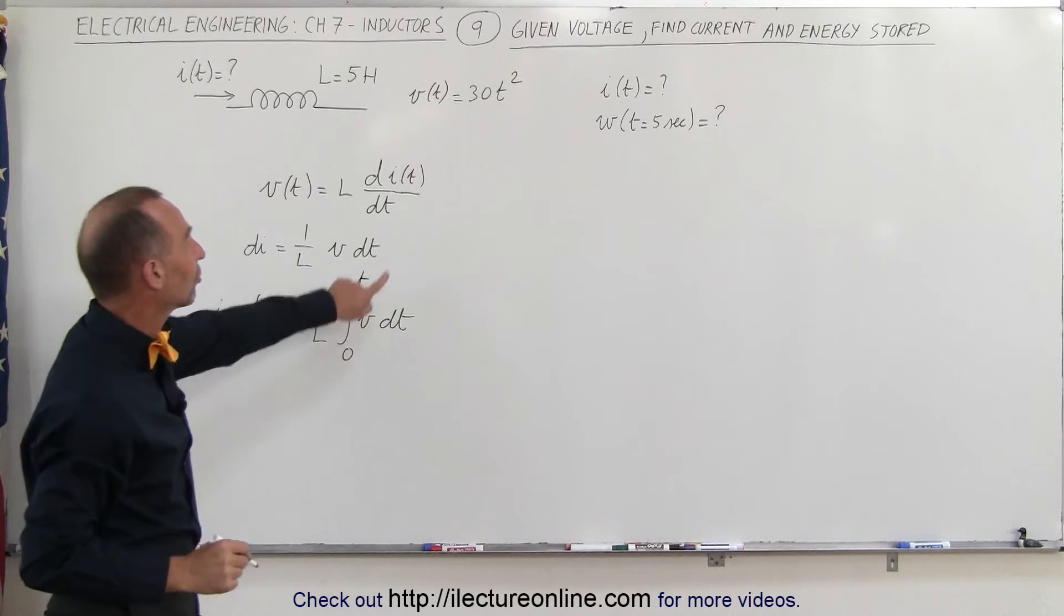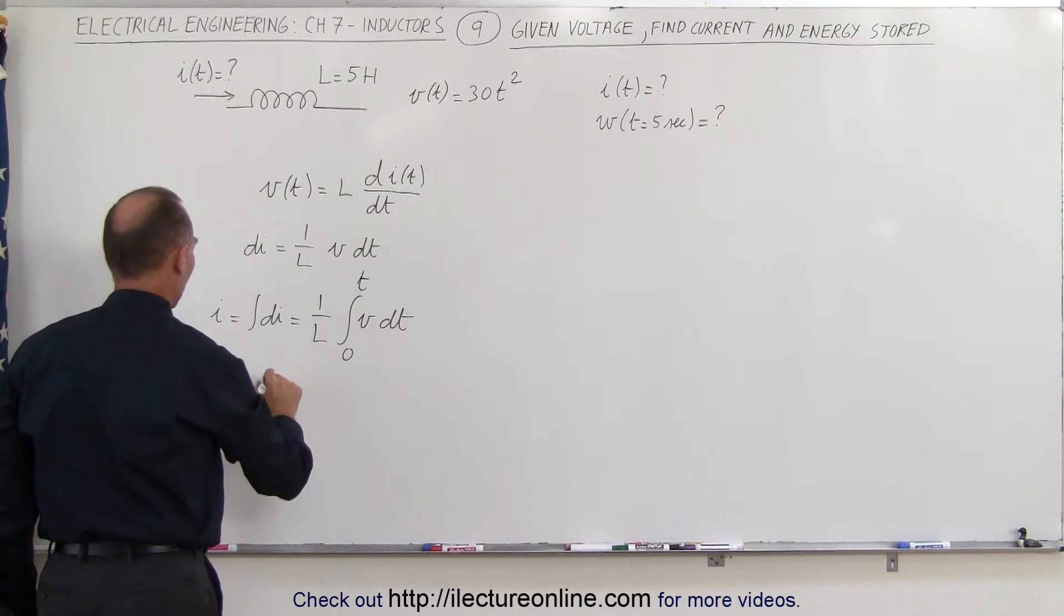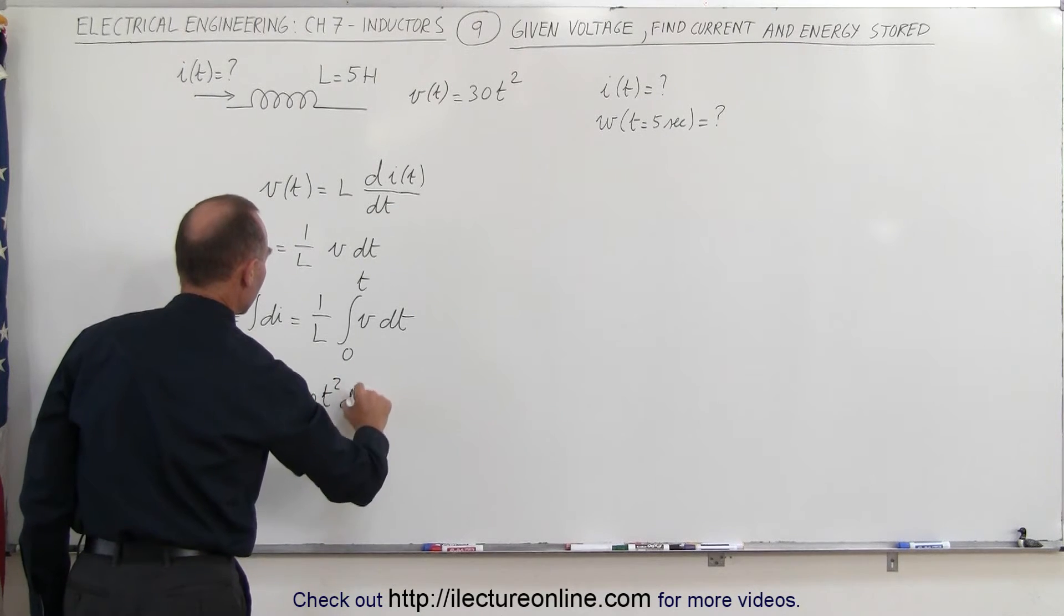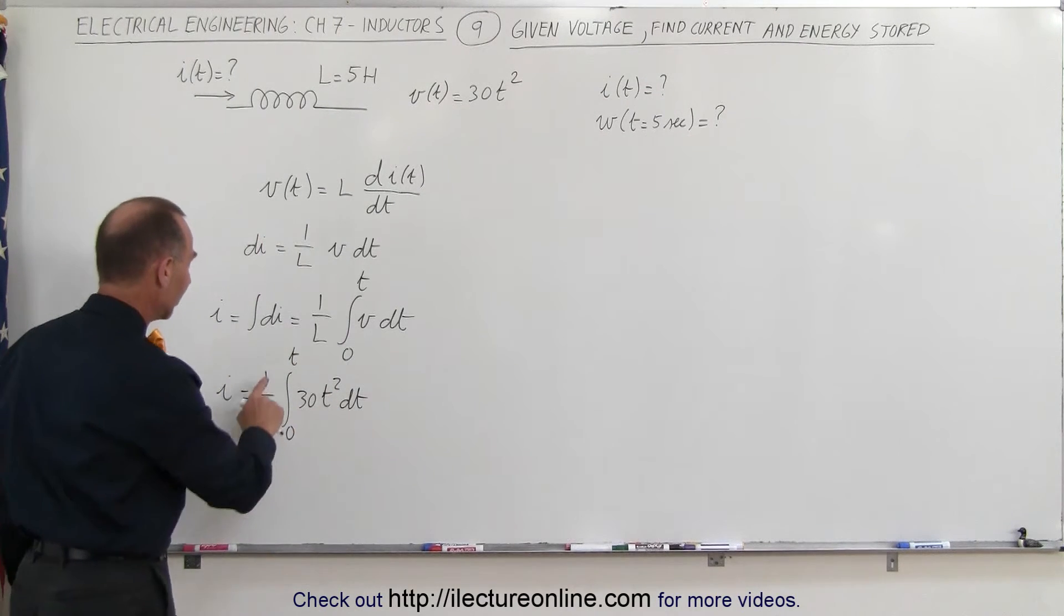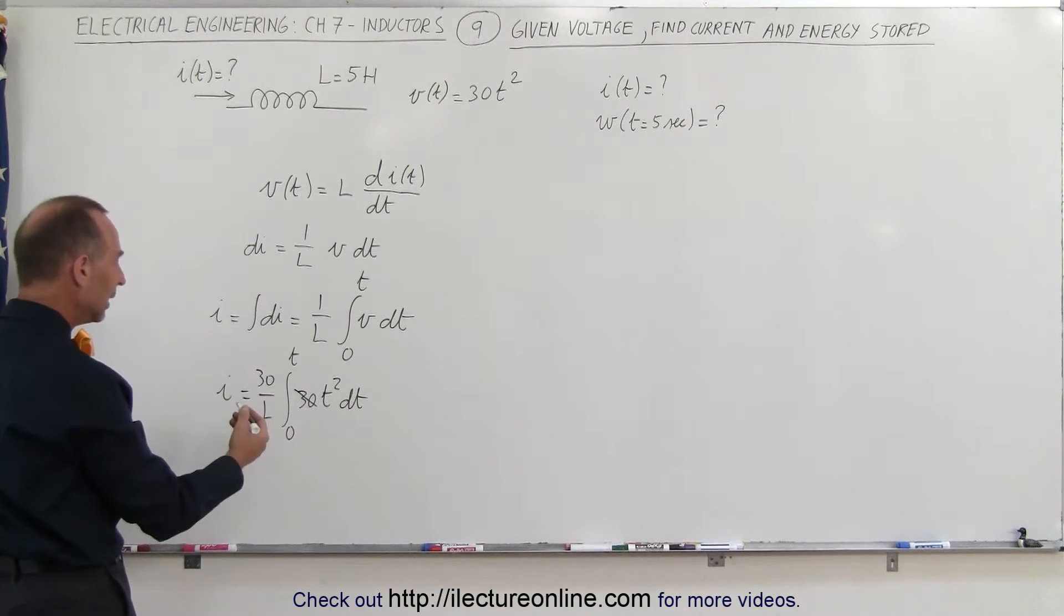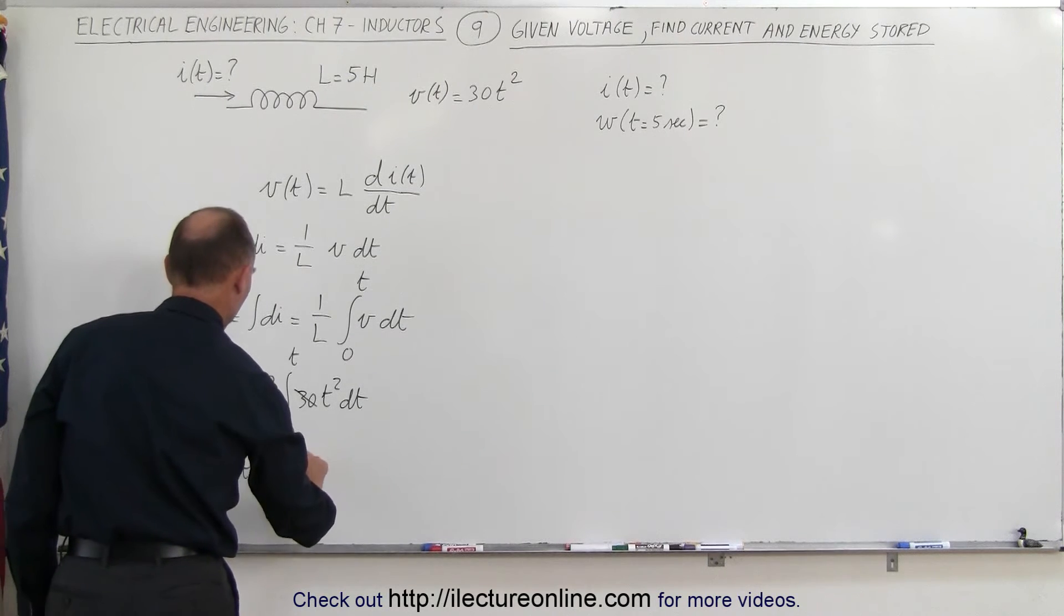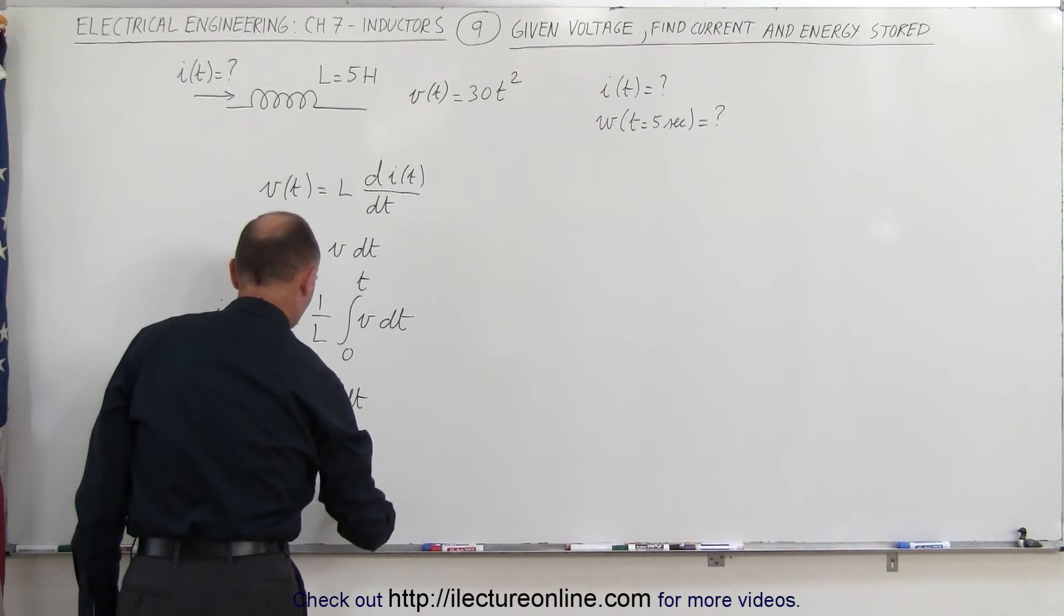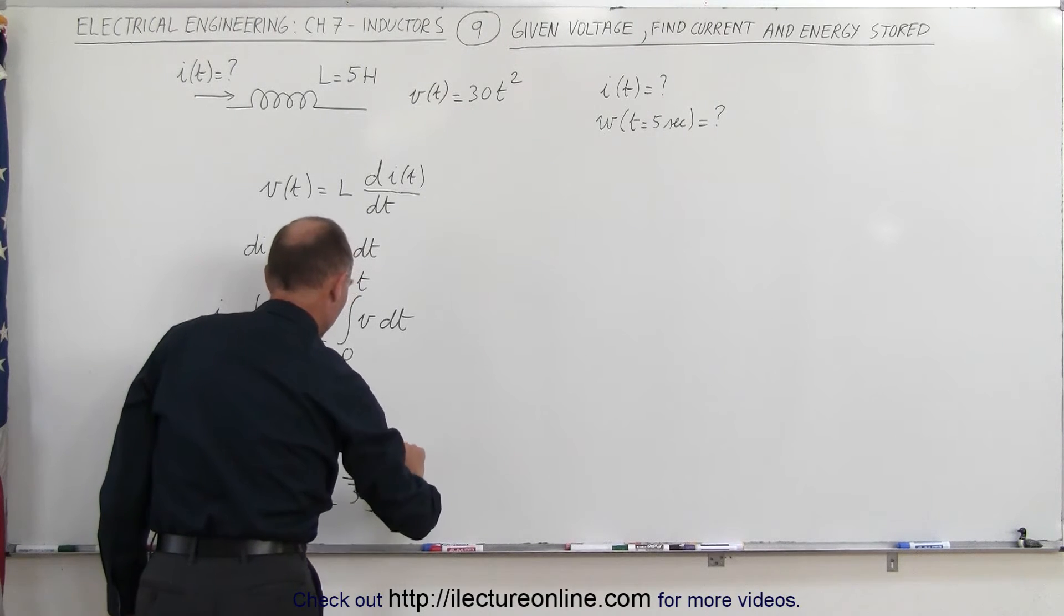Now V is the function that we have over here which is the function of time. So we can say that I is equal to one over L times the integral of 30 T squared dt from zero to T. Of course the 30 can come outside integral sign. We can then integrate that. So we can say that I as a function of time is equal to 30 divided by 5 because L is 5 Henry's times T cubed over 3 and we integrate that from zero to T.